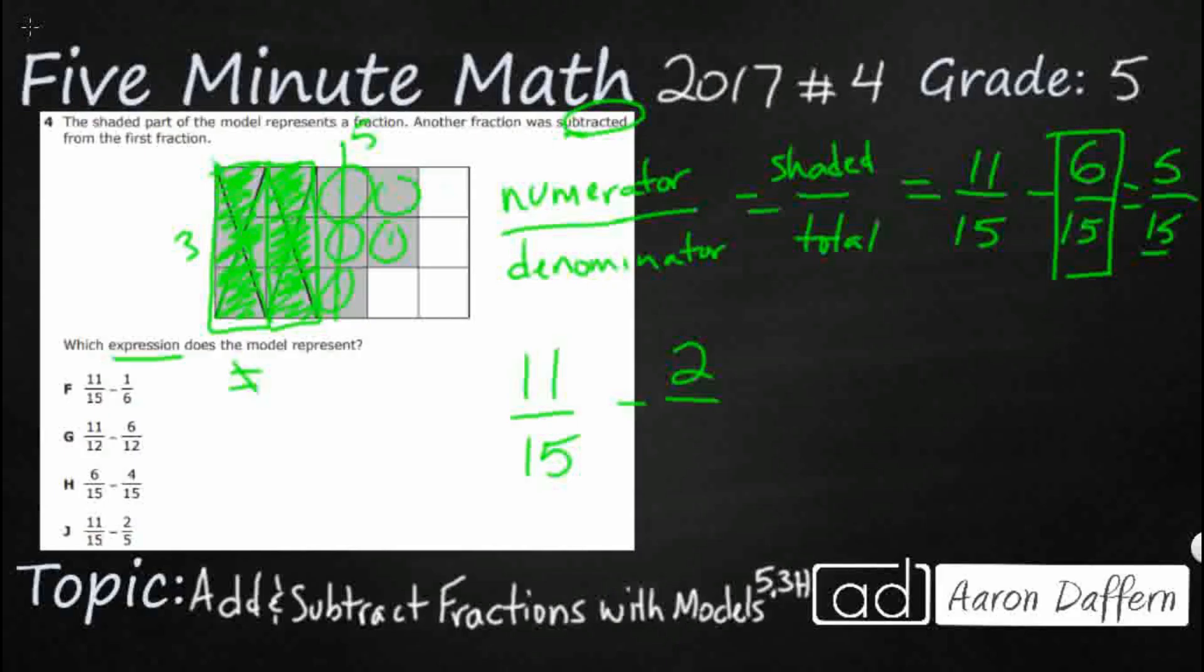I've got one column left, two columns left, three columns left. So they took two out of my five columns. And that five, that's going to be my denominator. Because we can visualize six fifteenths is equivalent to or equal to two fifths. Those are equivalent fractions. And eleven fifteenths minus two fifths is going to get us our answer right here of J.